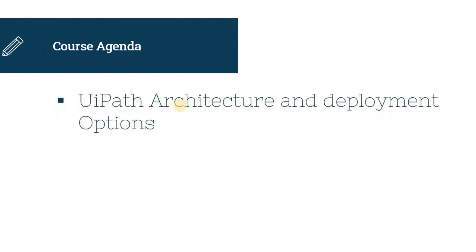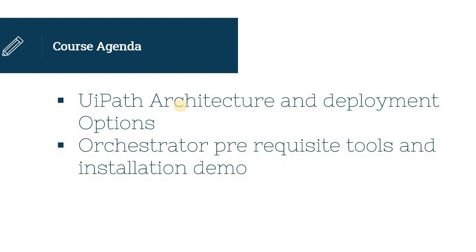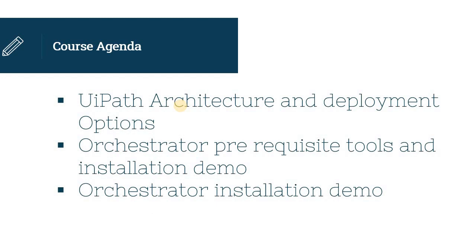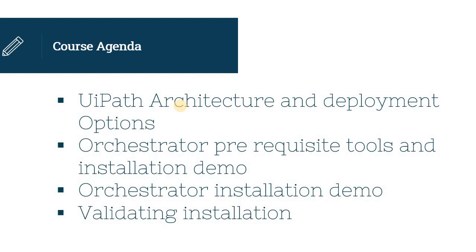In this section, we're going to find out the key areas we're going to focus on in this course. First is UiPath architecture — we're going to look at the UiPath architecture diagram and find out what components are involved, followed by the available deployment options of Orchestrator. Second, we're going to find out what prerequisite tools are required to install Orchestrator and what the installation steps of those prerequisite tools are. Third is the Orchestrator installation demo itself — a step-by-step installation instruction. We're going to download the Orchestrator, install it, and make sure it's installed correctly, which is the fourth point: validating the Orchestrator installation.